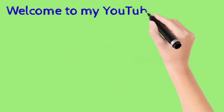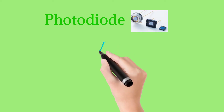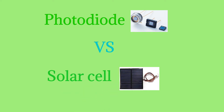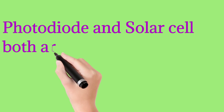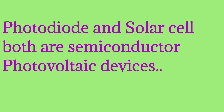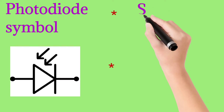Hello, my dear students, welcome to my YouTube channel Homera Memphysics. Today we are discussing the difference between a photodiode and a solar cell. There is a common point between a photodiode and a solar cell: both are semiconductor photovoltaic devices. Photovoltaic devices means light is exposed to the junction.